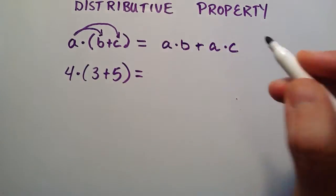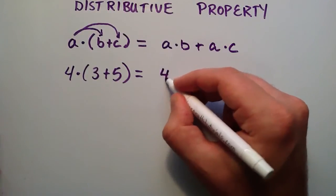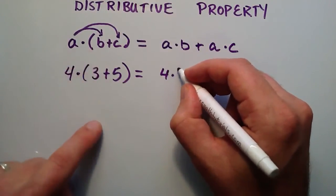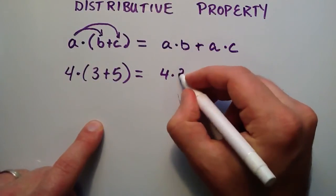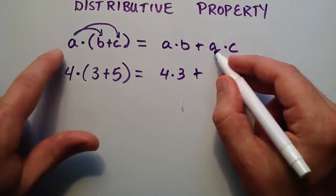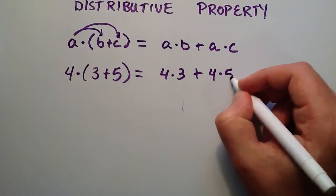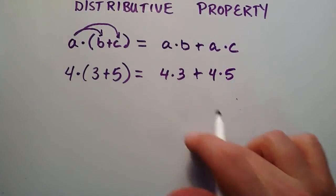And we're going to check to see if that's equal to a, which we said was 4, times b, which we said was 3, and then that plus a, which we said was 4, times c, we said was 5. So we're going to check to make sure that this works.